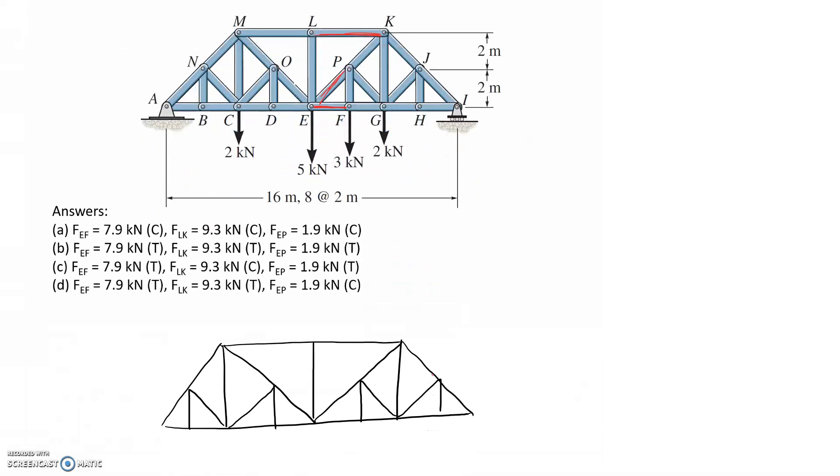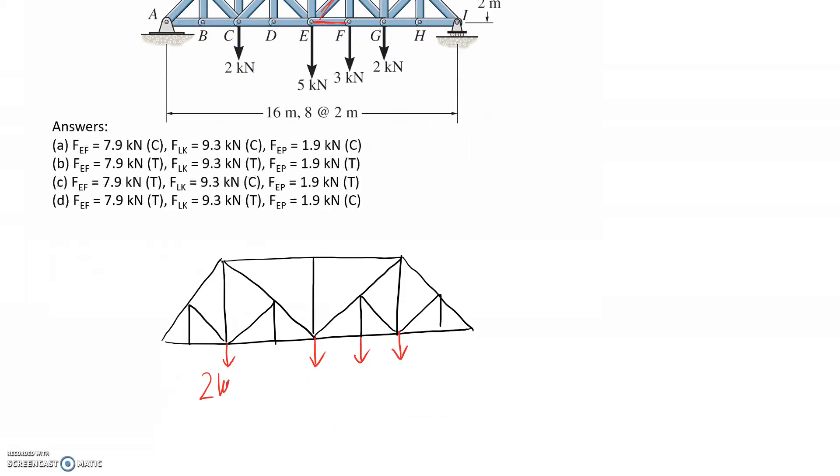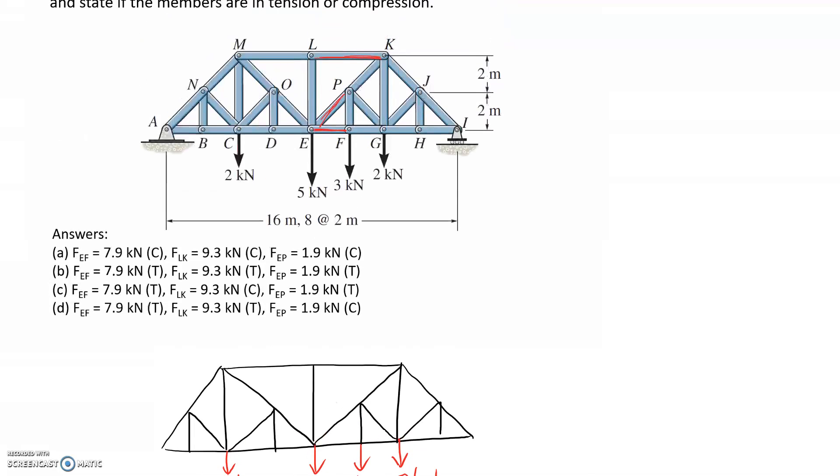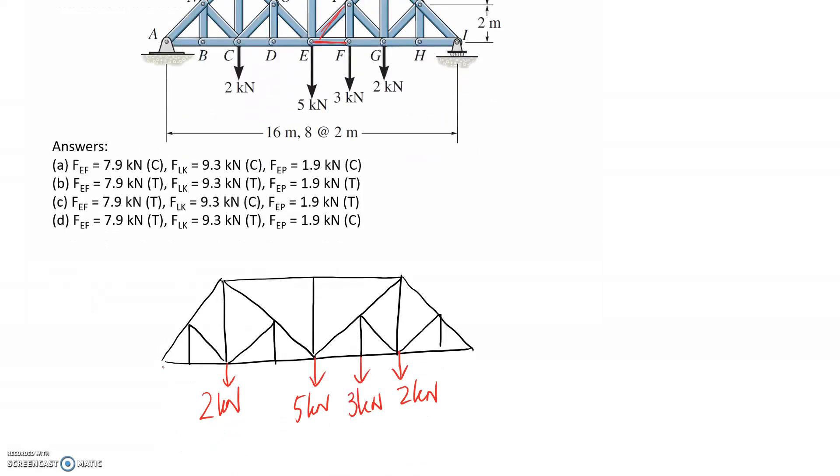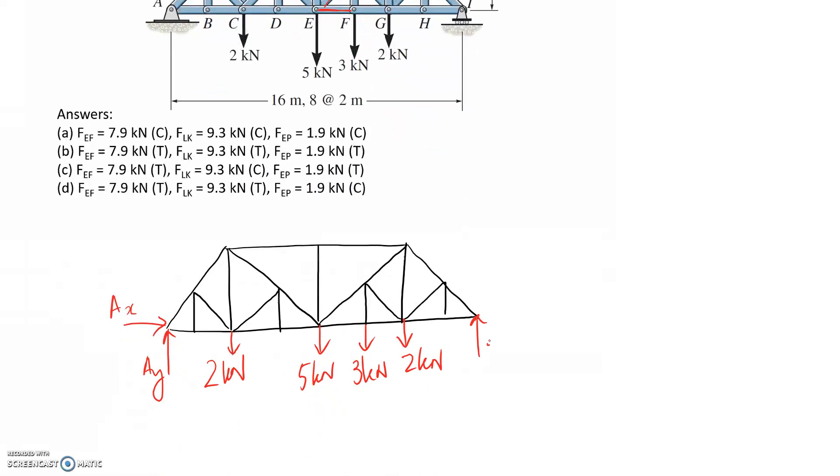I've copied down the shape of the truss here. The first thing I'll add on is all these external forces. We've got 2 kN, 5 kN, 3 and 2. Then we need to add on the support reactions. At A here we have a pin, which means we need a horizontal and a vertical force, which I'm calling Ax and Ay. At I here we have a roller, so that means we have just the one reaction perpendicular to the surface.